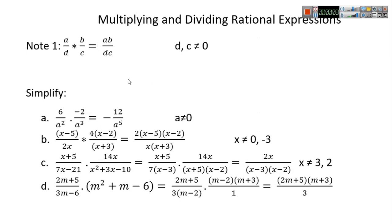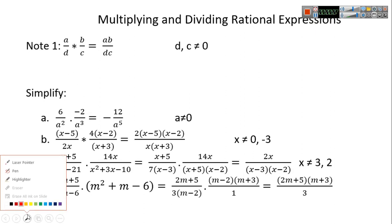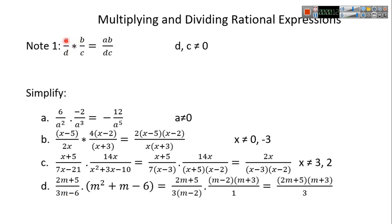Multiplying and dividing rational expressions. You all know from before that if you have a over d times b over c, we multiply numerator by numerator over denominator by denominator, so it equals ab over dc.